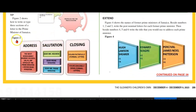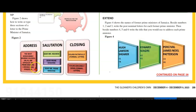Figure 2 shows how to write or type three sections of a letter to the Prime Minister of Jamaica: the address, the salutation, and the closing. The address: the Most Honourable Andrew Holness, ON, PCE, MP, Office of the Prime Minister, 1 Devon Road, Kingston. The salutation: Dear Mr. Holness, Dear Prime Minister, or Dear Mr. Prime Minister. The closing: